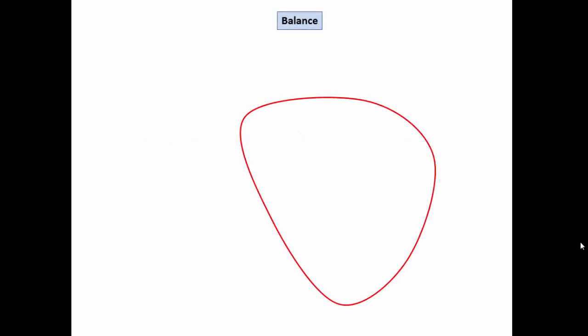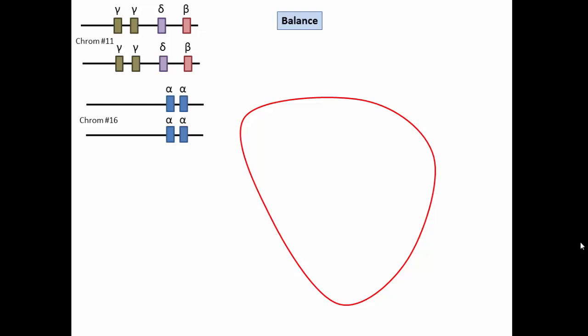Filling red cells with hemoglobin is all about balance. Despite being on different chromosomes, the globin genes are designed to put out the right amount of product so the output is balanced with about the same amount of alpha and beta chains.